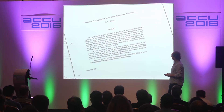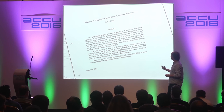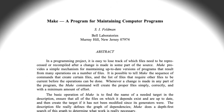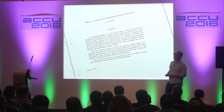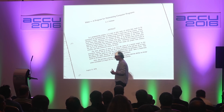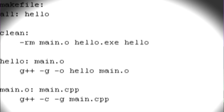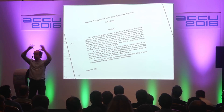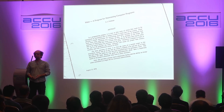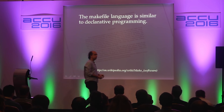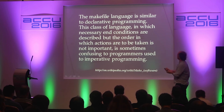I dug this one out — this is a printout of Feldman's original Make paper, stored in a portable document format. He wrote it in the mid-70s. Make is interesting because it's one of the classic family of build tools, but we often forget there are tools around the periphery of our programming skills that we don't recognize as first-class programming languages. The Make file language is similar to declarative programming — the idea being that necessary end conditions are described, and the order in which actions are taken is not important.